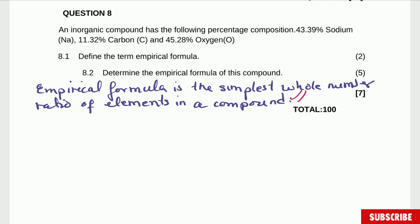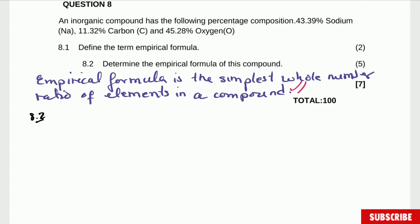So let's determine now the empirical formula. Now for this work the first thing I like to do is, this is 8.2, is to draw a table and in this table I'm going to have elements, I'm going to have percentage, I'm going to have mass, I'm going to have number of moles and I'm going to just write the formula we are going to use for number of moles. I like to write the ratio.